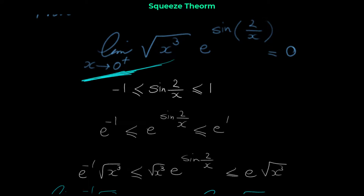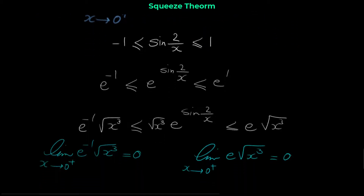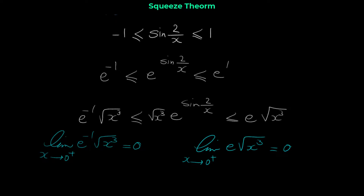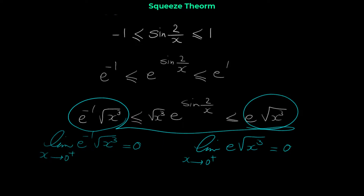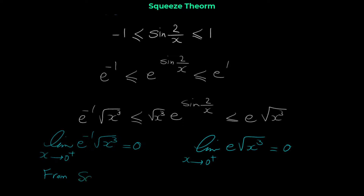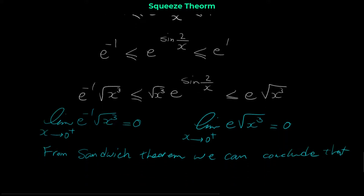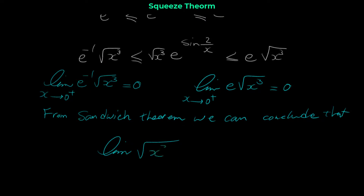If you don't know why the limit is only from the right, it's because of this radical. If x approaches 0 from the left, the inside of the radical would be negative, and we cannot have a negative inside a square root — so the limit wouldn't exist. It's necessary that x approaches 0 only from the right. Now that the limit of the left function is 0 and the limit of the right function is 0, from the sandwich theorem we can conclude that the limit of √(x³) · e^(sin(2/x)) when x approaches 0 is also 0.